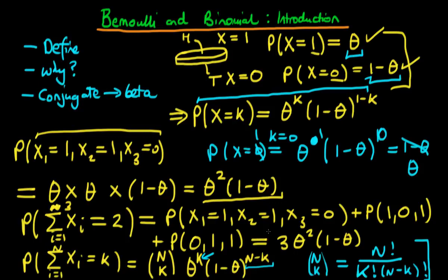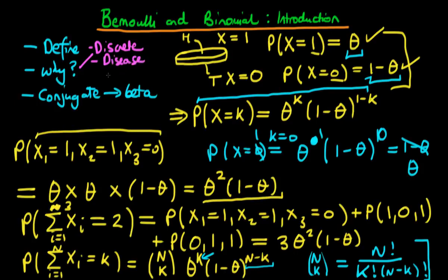Now we've derived both the Bernoulli and binomial distributions, we need to ask why we'd actually use them. We'd use these distributions when talking about discrete data with a success-or-failure type outcome, where the dependent variable is a binary indicator. An example might be the disease status of an individual — are they positive or negative for a disease? You can imagine using both a Bernoulli and a binomial distribution to describe that sort of situation.